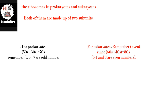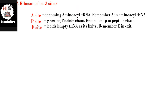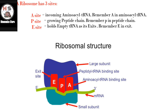Also, a ribosome has three sites. A site: incoming aminoacyl-tRNA — remember A in aminoacyl-tRNA. P site: growing peptide chain — remember P in peptide chain. E site: holds empty tRNA as it exits — remember E in exit.